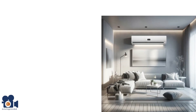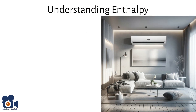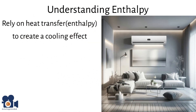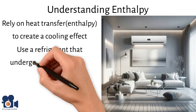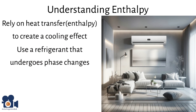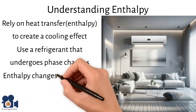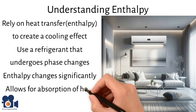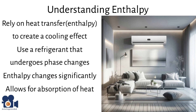For example, modern air conditioning or refrigeration wouldn't be possible without the understanding of enthalpy. These systems rely on the transfer of heat — enthalpy — to create a cooling effect. Essentially, they're on vapor compression cycles which use a refrigerant that undergoes phase changes from liquid to gas and back to liquid in a closed system. During these phase changes, the enthalpy of the system changes significantly, allowing for the absorption and release of heat. We'll go over the specifics of AC with a great example of its cooling effects later in the video once enthalpy is explained a bit more.